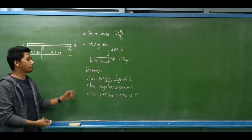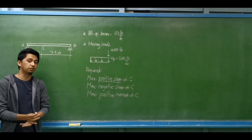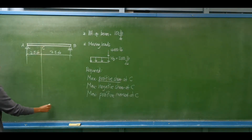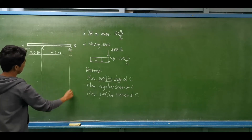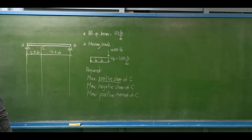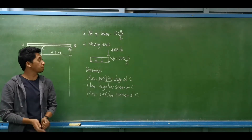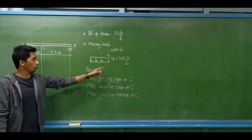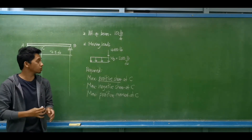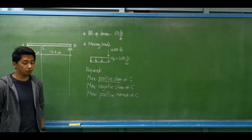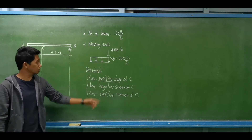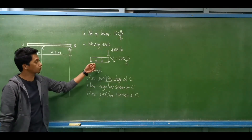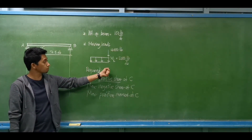This is an example for the application of influence lines. We have a beam with a length of 10 feet. The weight of the beam is equal to 100 pounds per foot. Then we have two moving loads: a concentrated load of 4,000 pounds, and a uniform live load of 2,000 pounds per foot.